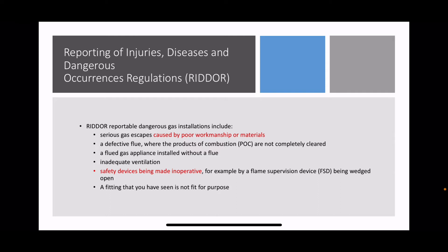For example, I know of a case where somebody had come in to fix the gas and used garden hose instead of copper pipe to connect up a gas fire. If you come across a defective flue where the products of combustion are not completely cleared - for example, an open flue with a 90-degree bend in it, which is illegal - it won't allow the products of combustion to clear. That's badly designed, bad workmanship.